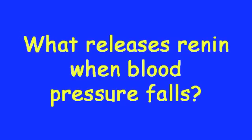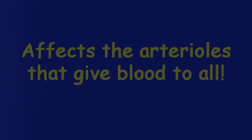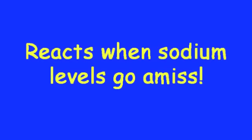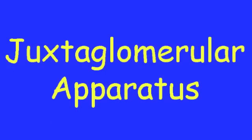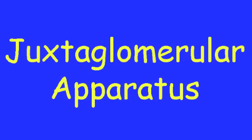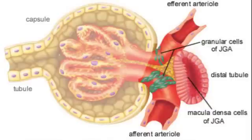What releases renin when blood pressure falls? Juxtaglomerular apparatus! Affects the arterioles that give blood to all — juxtaglomerular apparatus. Reacts when sodium levels go amiss — juxtaglomerular apparatus. And controls blood pressure in the glomerulus — juxtaglomerular apparatus!